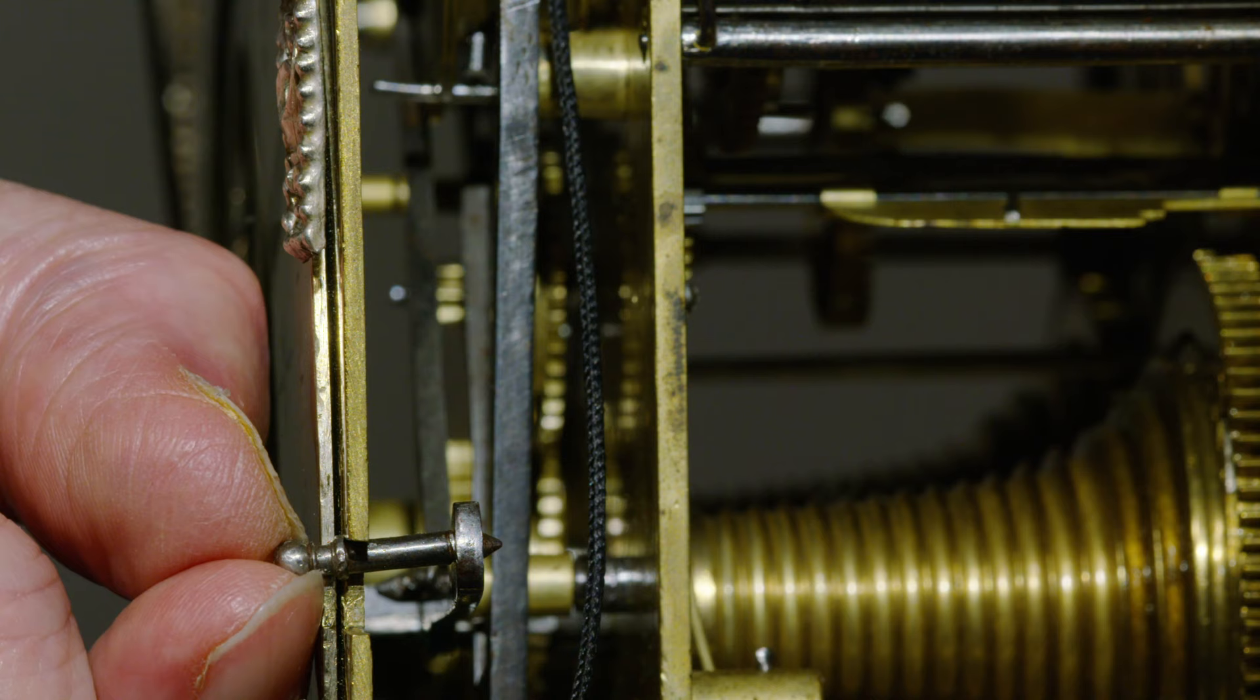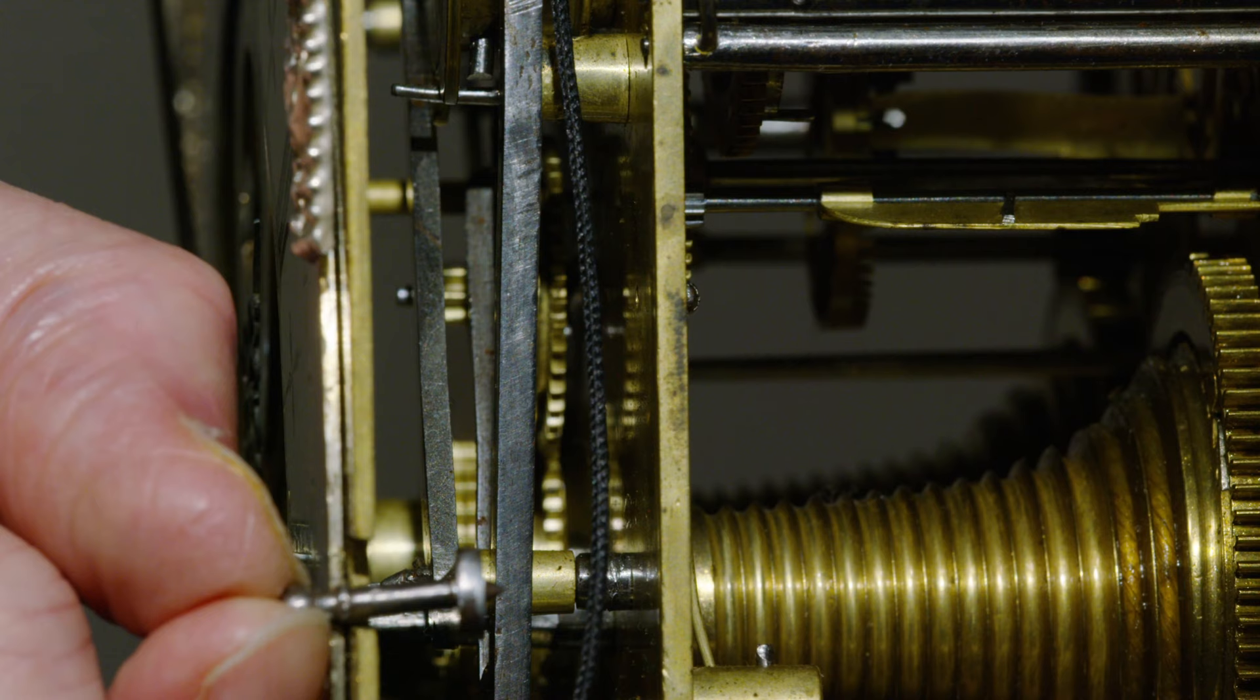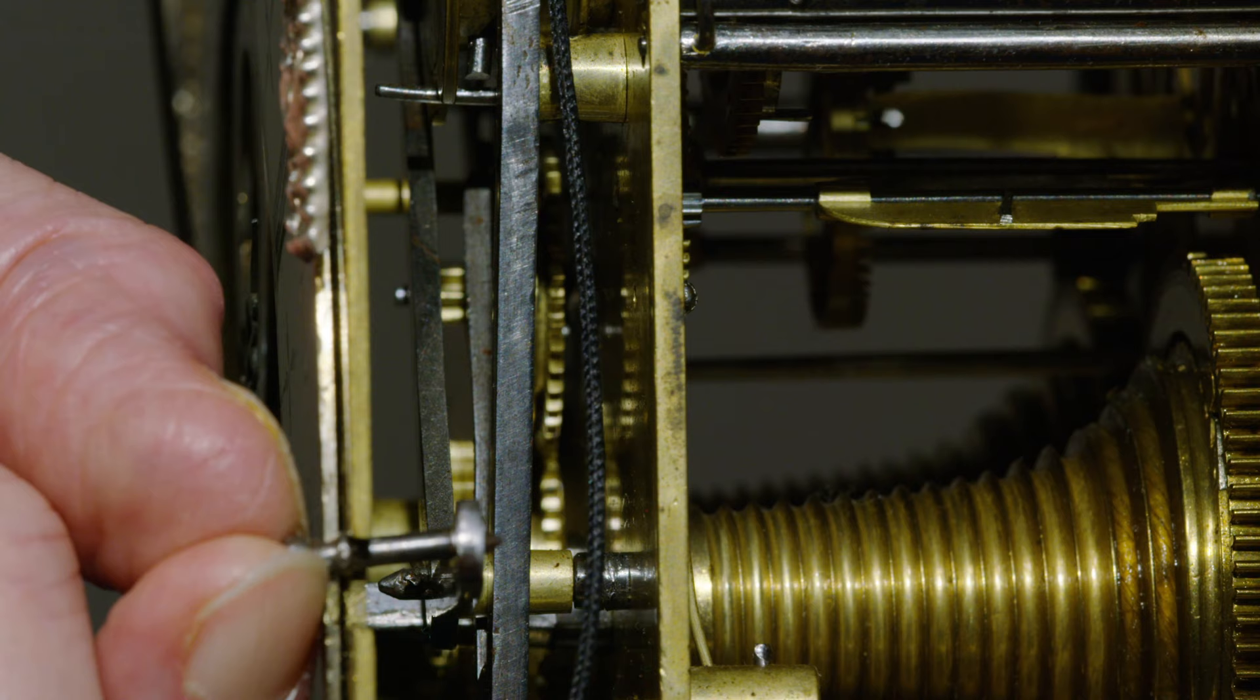So this is the no-strike position, whereas if I move the lever down it allows the rack mechanism to drop and to strike the hour as necessary. But when it's in the no-strike position, it locks the striking mechanism at night so it doesn't sound.